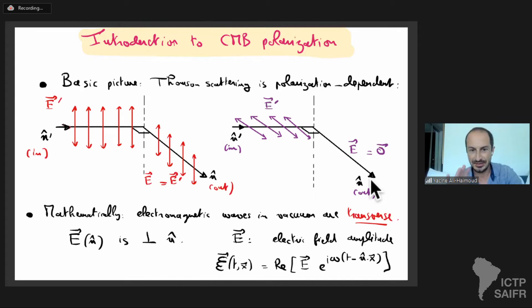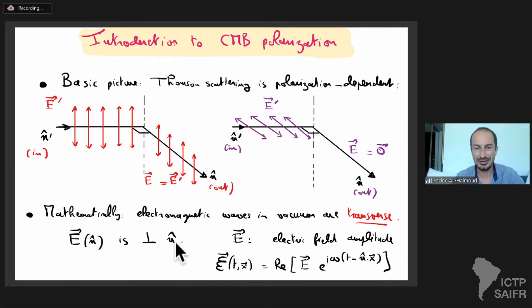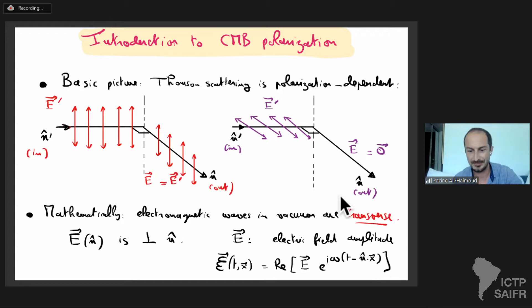Let's derive this more mathematically. Electromagnetic waves in vacuum are transverse: if you have an electromagnetic wave E propagating in direction n-hat, the electric field oscillates perpendicular to the direction of propagation. The actual electric field as a function of time and position is the real part of this complex electric field amplitude times e to the i-omega-t minus n-dot-x.